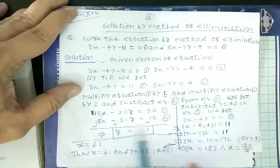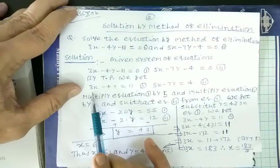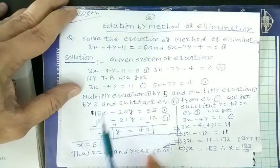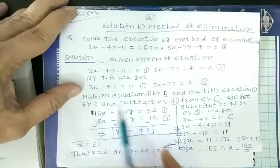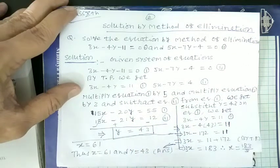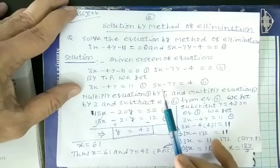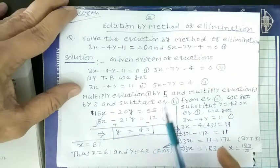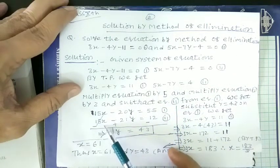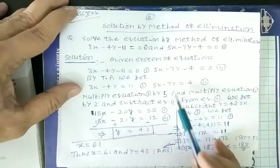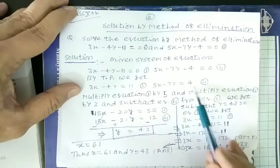We get multiply equation number 1 by 5: 5 times 3 is 15, 15x minus 5 times 4 is 20y equals 11 times 5 is 55. Equation second multiplied by 3: 3 times 5 is 15x minus 3 times 7 is 21y, 3 times 4 is 12.